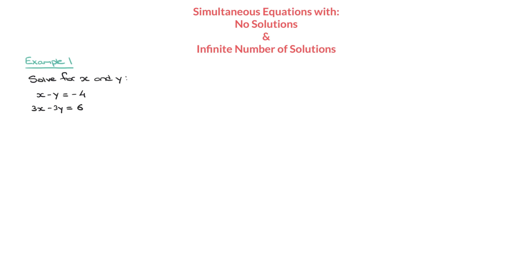In this video, we learn about simultaneous equations which have either no solutions or an infinite number of solutions. To learn about them, we're going to be working through two examples. In each case, I'll be showing you what kind of result we get when we solve by elimination as well as by substitution, and how to interpret the result — or lack of result — with straight line graphs.